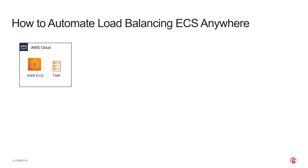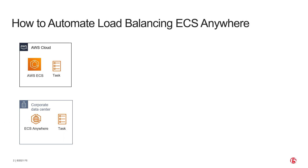Hello. In this video, we're going to be talking about how to automate load balancing in ECS Anywhere. ECS Anywhere is an extension of the AWS ECS service which runs in AWS. In the case of ECS Anywhere, you are able to deploy your container workloads in your on-prem data center instead of AWS.